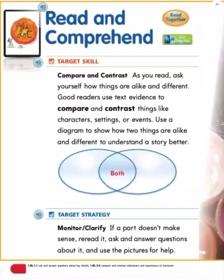Read and comprehend. Compare and contrast. As you read, ask yourself how things are alike and different. Good readers use text evidence to compare and contrast things like characters, settings, or events. Use a diagram to show how two things are alike and different to understand the story better.